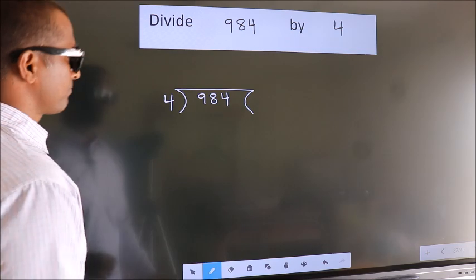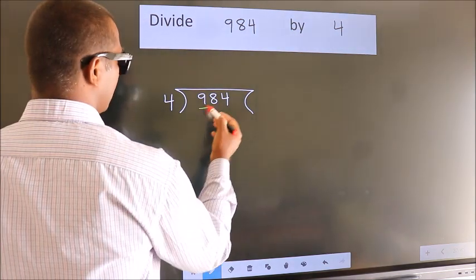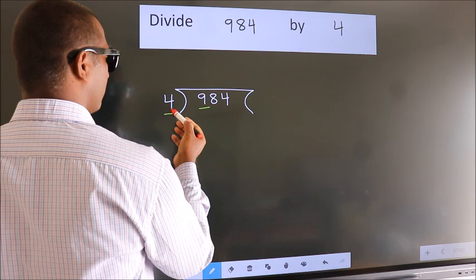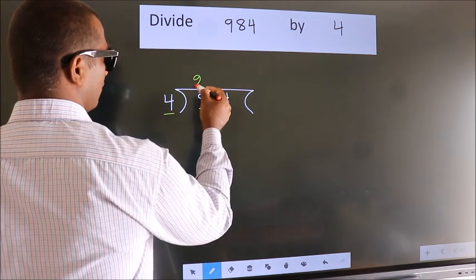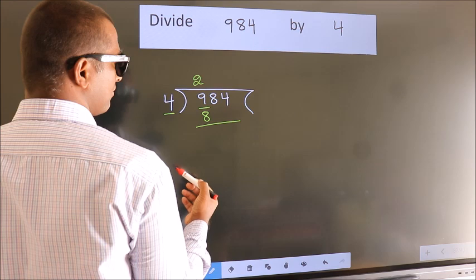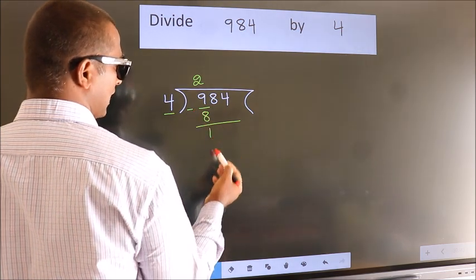Next. Here we have 9, here 4. A number close to 9 in 4 table is 4 twos 8. Now we should subtract. We get 1.